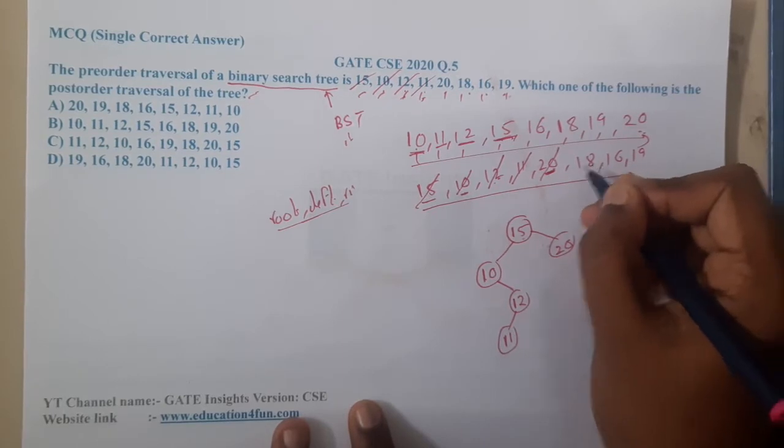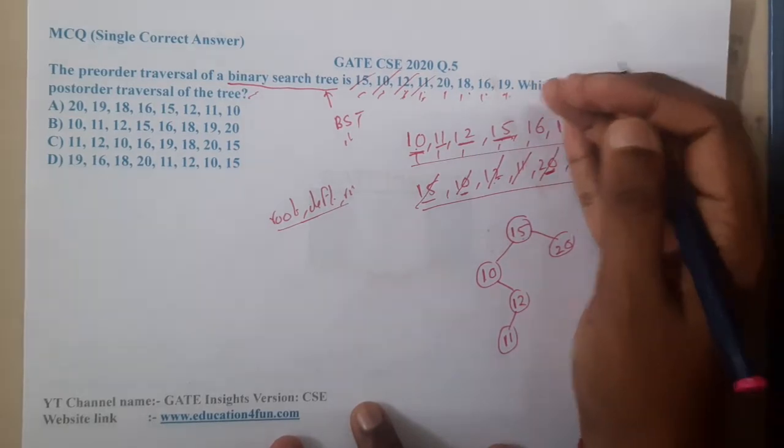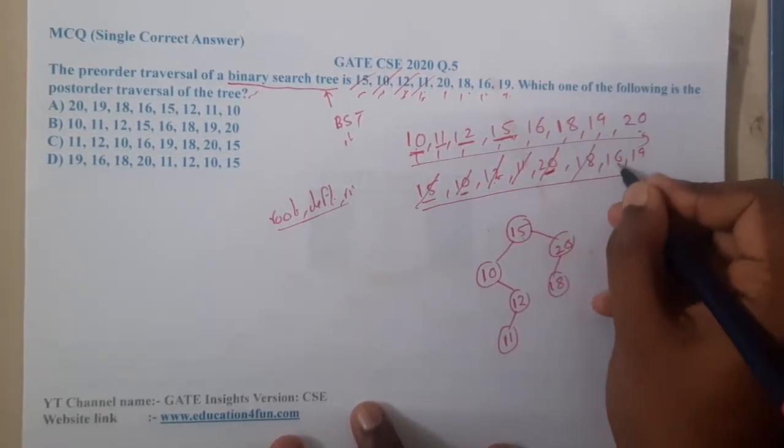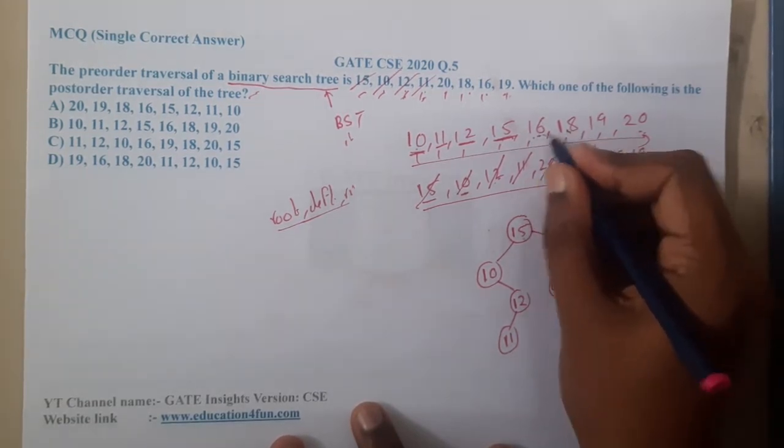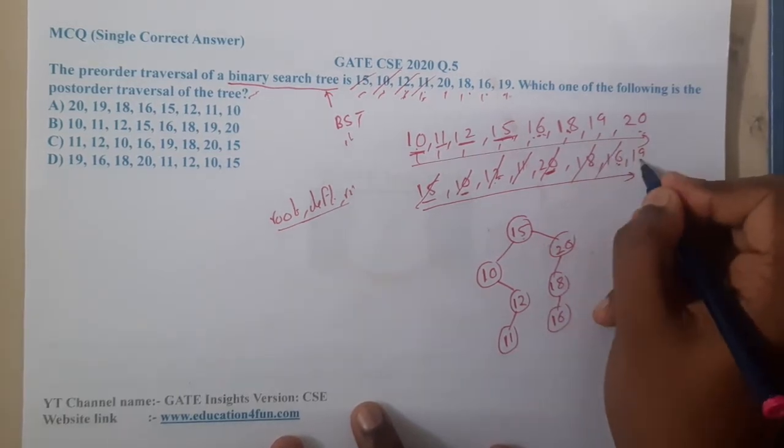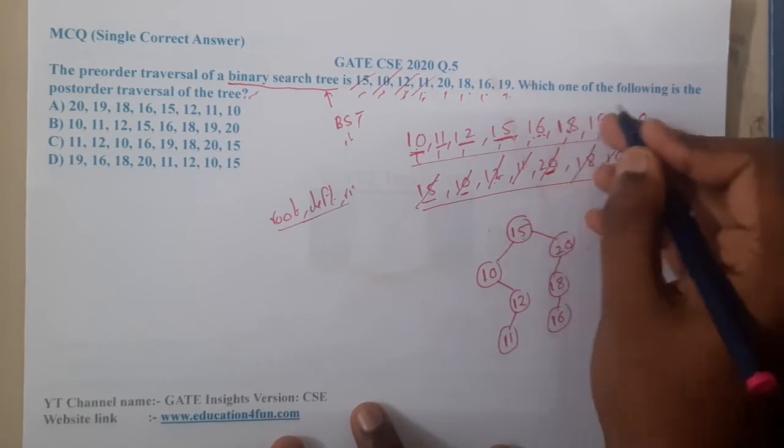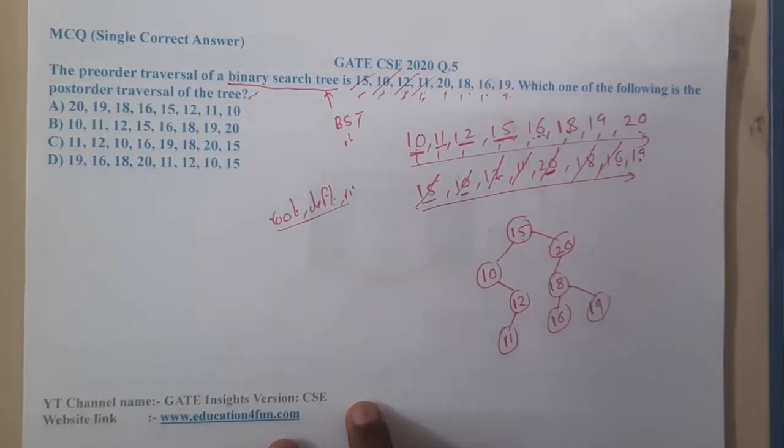Now where is 18? 18 is on the left of 20, so here you will write 18. Where is 16? 16 is on the left of 18, so it will be here. Where is 19? 19 is greater than 18, on the right of 18. So now we have successfully drawn the tree.